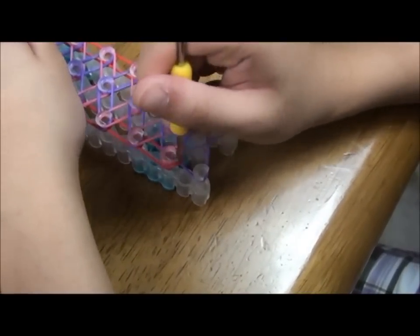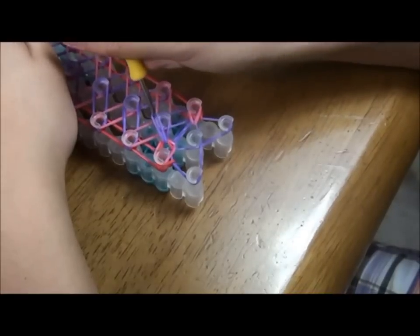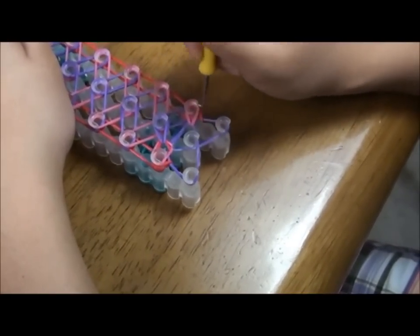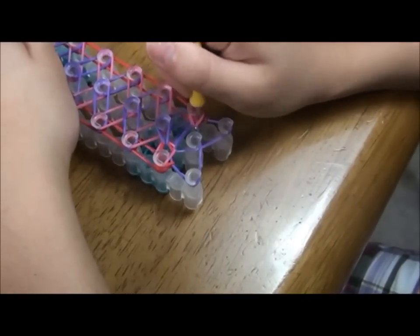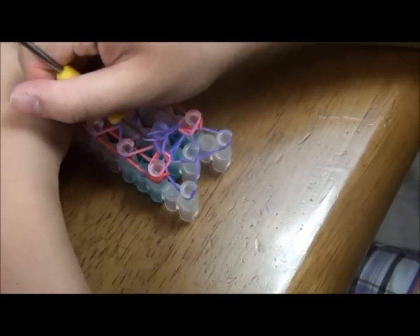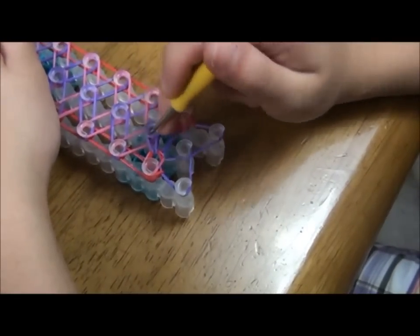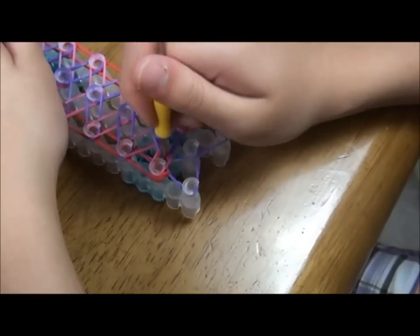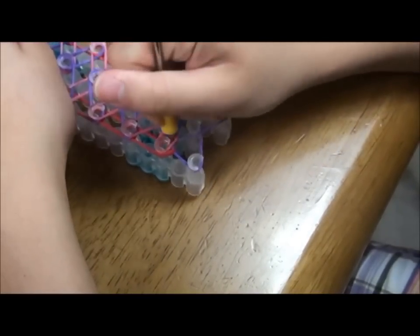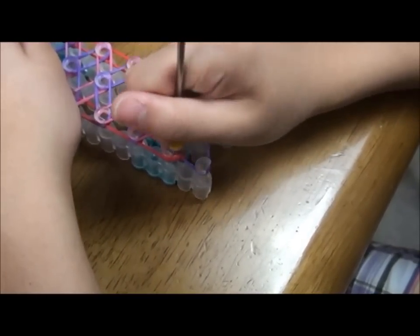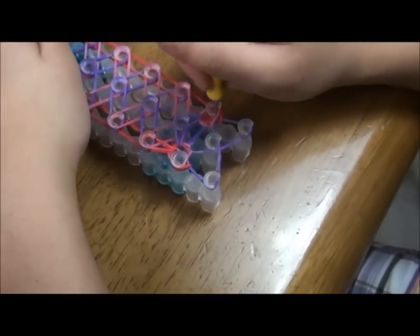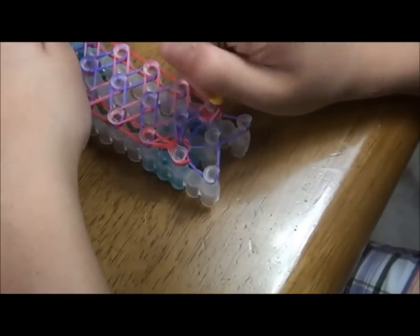Hook the purple rubber band going inwards like this, and hook the other purple rubber band inwards like that again. Now we're going to get the red rubber band again and hook it forward. Then grab this red rubber band and hook it forward as well.